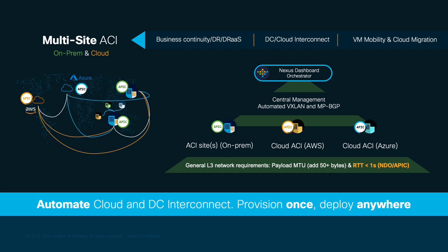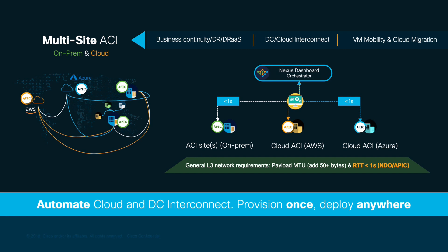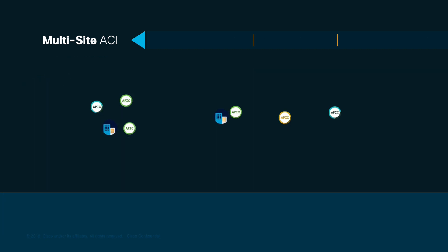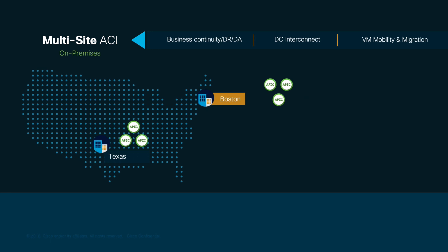Nexus Dashboard Orchestrator will simply connect to each APIC or APIC cluster and configure them using their APIs. Therefore, you want to make sure that you have up to one second in round-trip time between your Nexus Dashboard and each APIC cluster. This makes multi-site topologies suitable for fabric extension across large geographical distances where multi-pod may not be an option.